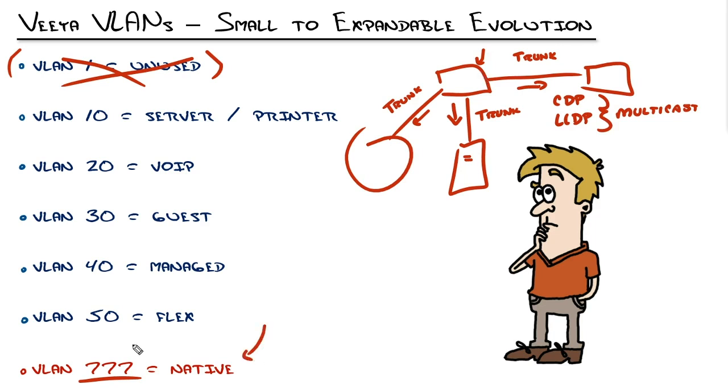I've been using the number 777 for my native VLAN for years and years and years. So if you ever stumble on that in a network, just think Jeremy was here, right? You can just pick whatever VLAN number you'd like to. Just make sure it doesn't cross into production traffic and you keep it consistent across the entire site.